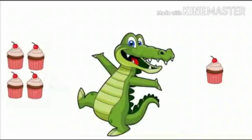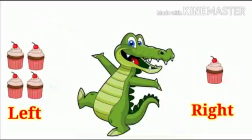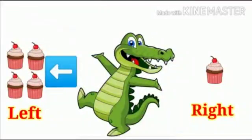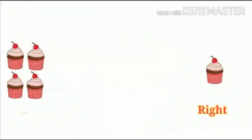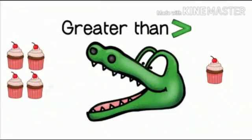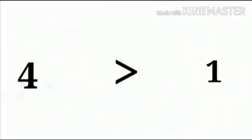Here we can see few cakes on the left side and right side. Can you help Mr. Krokodai? Which side is having more number of cakes? Yes, the left side is having more number of cakes and Krokodai should eat the left side. We can see 4 cakes are greater than 1 cake. And if we represent it with a number, we can see 4 is greater than 1.